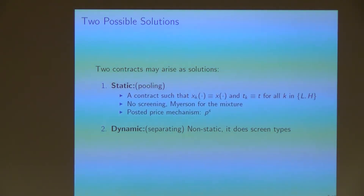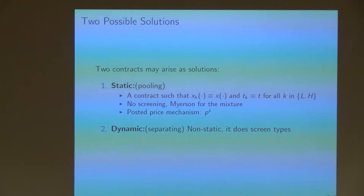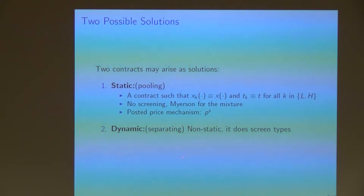The second contract is a dynamic contract — the opposite of the static. It is a contract that screens the types, so for example with low and high type buyers, we have different allocations for each type. If it is more familiar, you can think of the static contract as a pooling contract and the dynamic as a separating contract.